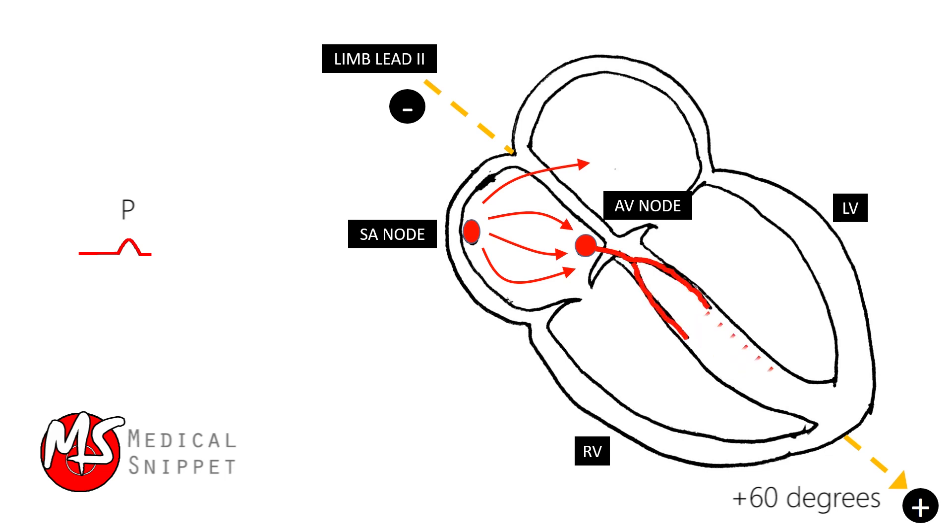The first area of the ventricular muscle to be activated is the interventricular septum. The septum depolarizes from left to right. This vector is directed slightly away from the positive electrode of limb lead 2, thus causes a small negative deflection in ECG called the Q-wave.